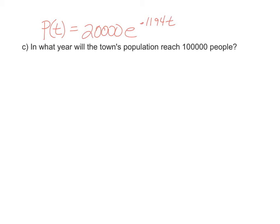When we write this down, we'll have 100,000 equals 20,000 e to the 0.1194t. This is good, we have the variable t left in our equation, because we're looking for a time, in what year.